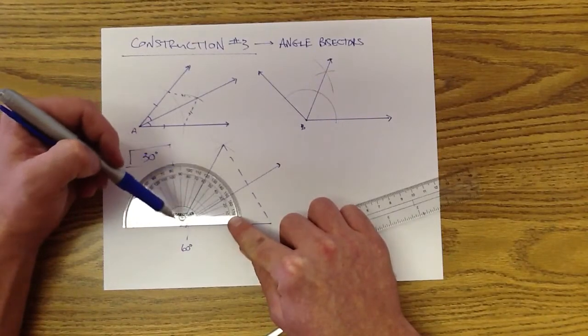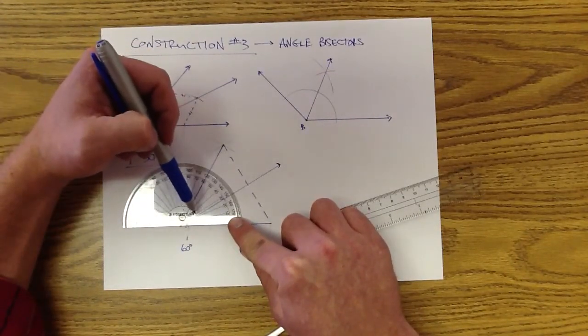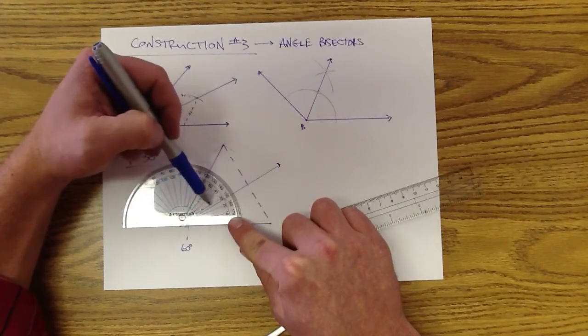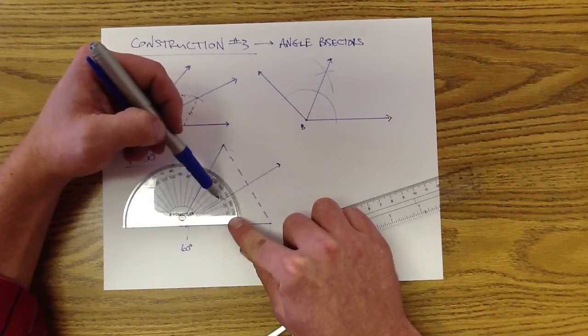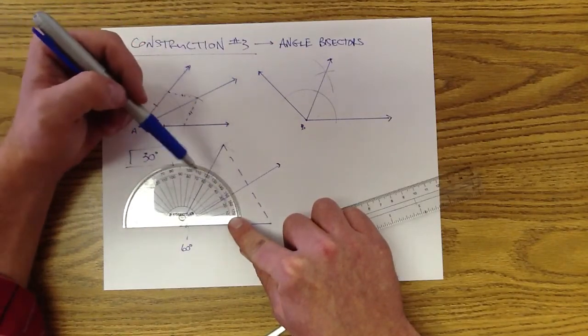30, I'm a little off on my 30. According to this, my 30 degree angle should be coming a little bit through here. So I'm probably 5 degrees off on my 30 degree angle.